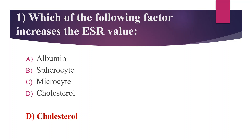Let's go through other options. Option A, albumin: ESR slightly decreases with increasing concentration of albumin. Option B, spherocyte: the presence of spherocytes inhibits Rouleaux formation and can decrease the ESR. Then microcyte, which also decreases the ESR due to slower settling.